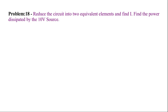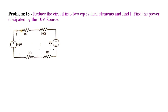Hello everyone. This is problem 16. Reduce the circuit into two equivalent elements and find the power dissipated by the 10-volt voltage source. The two equivalent elements are a voltage and a resistor — R equivalent and V equivalent.